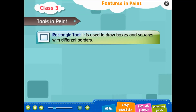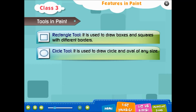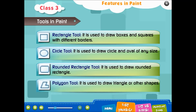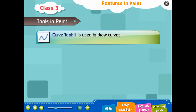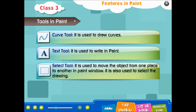Rectangle tool: it is used to draw boxes and squares with different borders. Circle tool: it is used to draw circles and ovals of any size. Rounded rectangle tool: it is used to draw rounded rectangles. Polygon tool: it is used to draw triangles or other shapes. Curve tool: it is used to draw curves. Text tool: it is used to write in Paint. Select tool: it is used to move objects from one place to another.